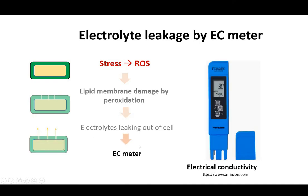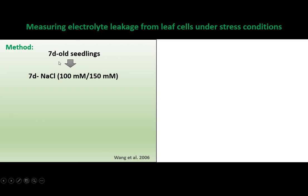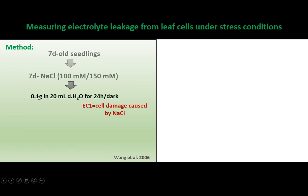We can measure this using an electrical conductivity meter. The normal procedure is: after growing Arabidopsis seedlings for seven to ten days, transfer them to different treatments such as sodium chloride at different concentrations for one to two weeks or ten days. Then take 0.1 gram of leaf or root tissue.